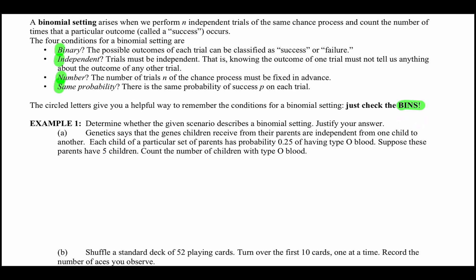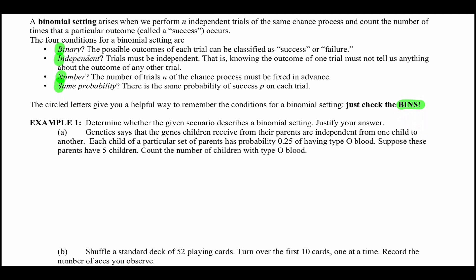Those are the four things to check when you're checking to see if something falls under a binomial distribution. So if it falls under all of those, then you're good. Examples — what are examples and what are not examples of binomial distribution? Genetics says that the genes children receive from their parents are independent from one child to the next.